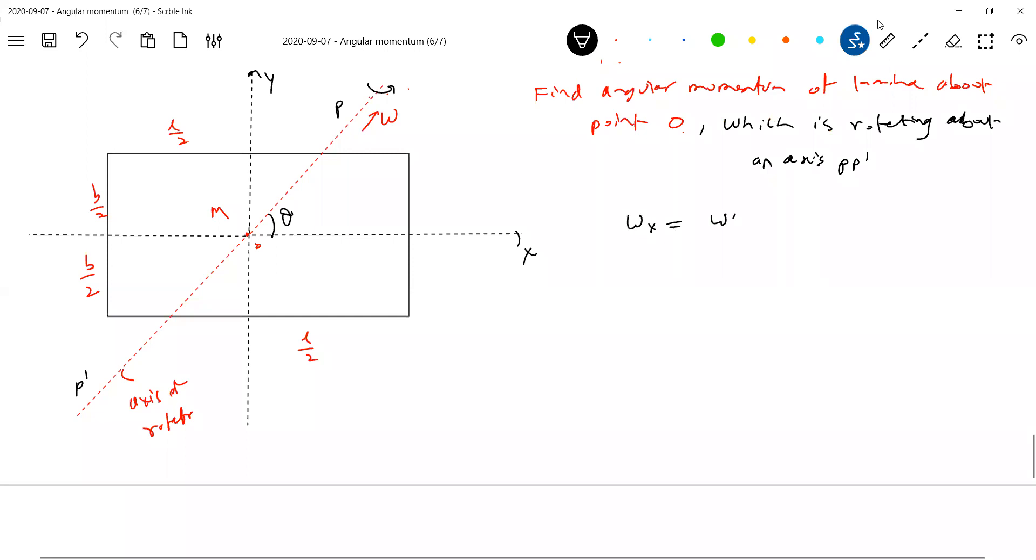First, let me calculate angular velocity about x-axis. Omega cos theta. Sir, can you resolve omega? Omega is a vector. It is an axial vector. So I can resolve. Then, what is the moment of inertia about x-axis? M B square by 12. About y-axis, M L square by 12.